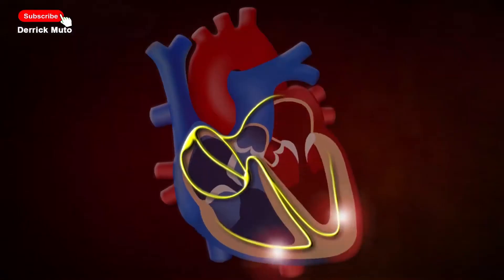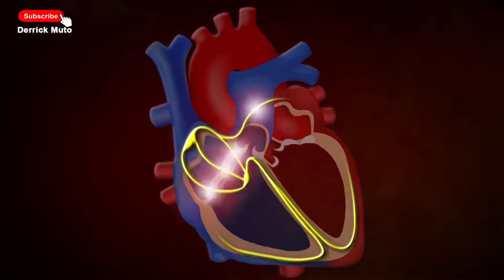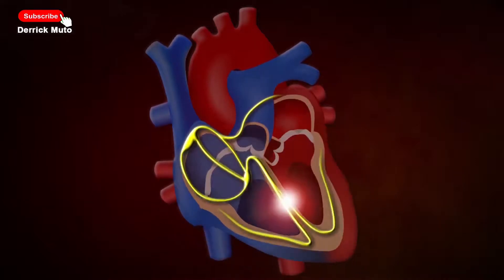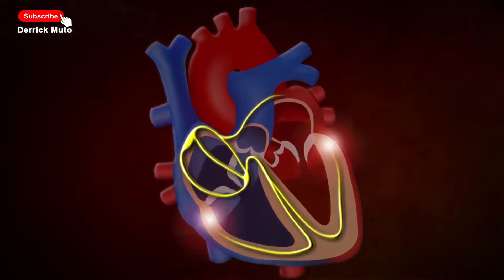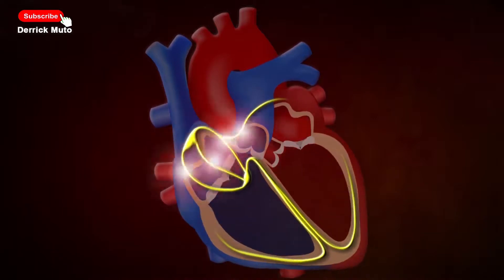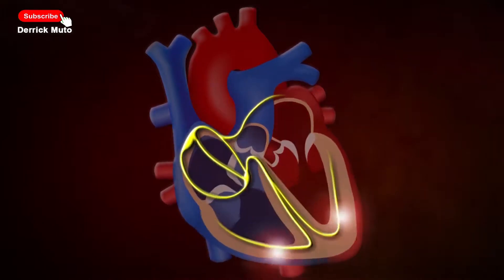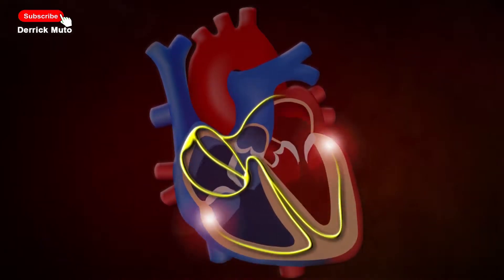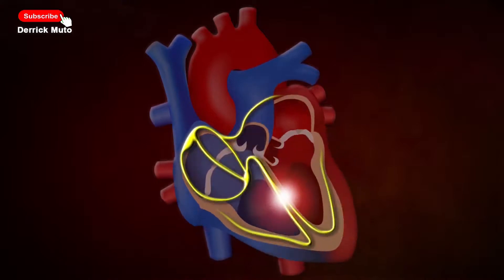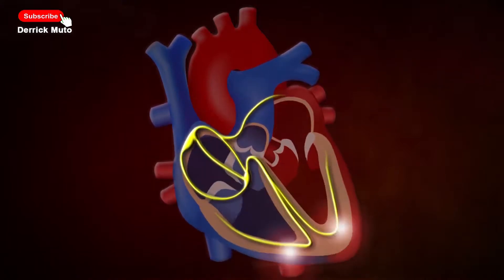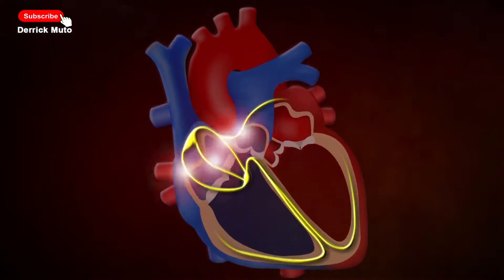So, how does the conducting system of the heart work? The heart is myogenic — it generates its own electrical impulses. The sinoatrial node, the heart's pacemaker, initiates the heartbeat by sending an electrical impulse. The impulses cause a wave of excitation that spreads through the atria, causing atrial systole. The impulses then reach the atrioventricular node, which electrically connects the atria and ventricles.